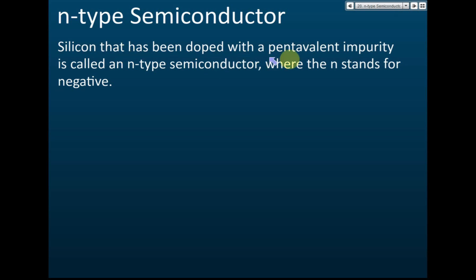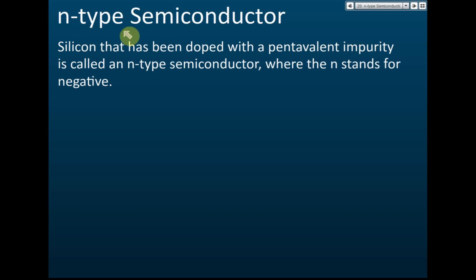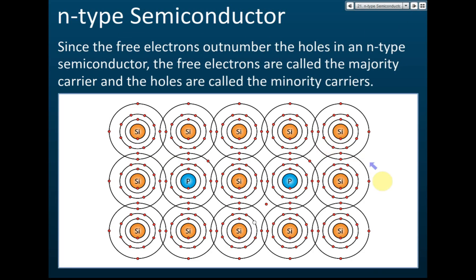The silicon that has been doped with a pentavalent impurity is called an n-type semiconductor. The 'n' stands for negative, because when we dope with pentavalent, we produce a lot of free electrons, and electrons carry negative charge. So this type of semiconductor is called a negative-type or n-type semiconductor. The n-type semiconductor contains a lot of free electrons.